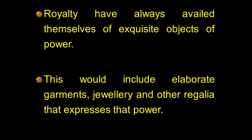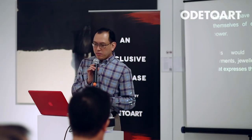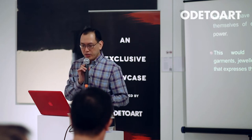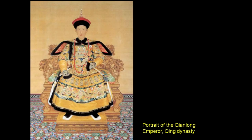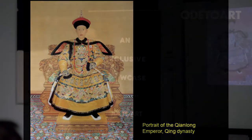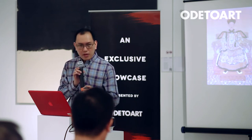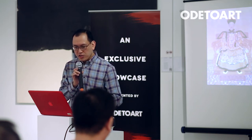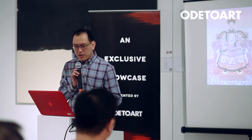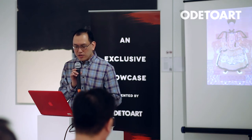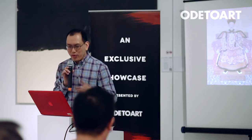Royalty have always availed themselves of exquisite objects of power — this could include garments, jewelry, and other regalia that expresses their power. I'm going to show you the dragon robe. This is Emperor Qianlong — one of the two great emperors, the other being Kangxi, who I believe was his grandfather. Here you can see he's seated on a dragon throne. The emperor, especially the Qing emperor, knew how to harness such symbols to emphasize their authority and imperial power.